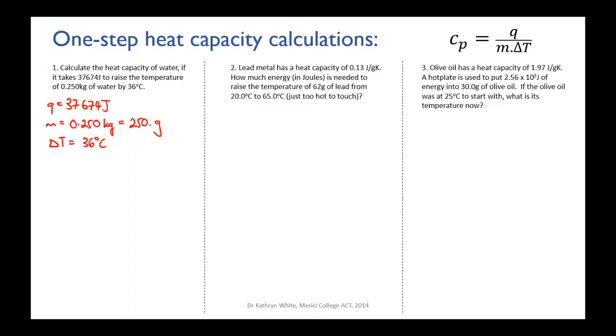So now it's simply a matter of plugging it into the equation. We've got that the heat capacity equals the energy over the mass times the change in temperature. And if you plug that into your calculator, you will get 4.186. And the units, our energy was joules, our mass was grams, and our temperature was degrees Celsius. So our units would be joules per gram per degree Celsius.